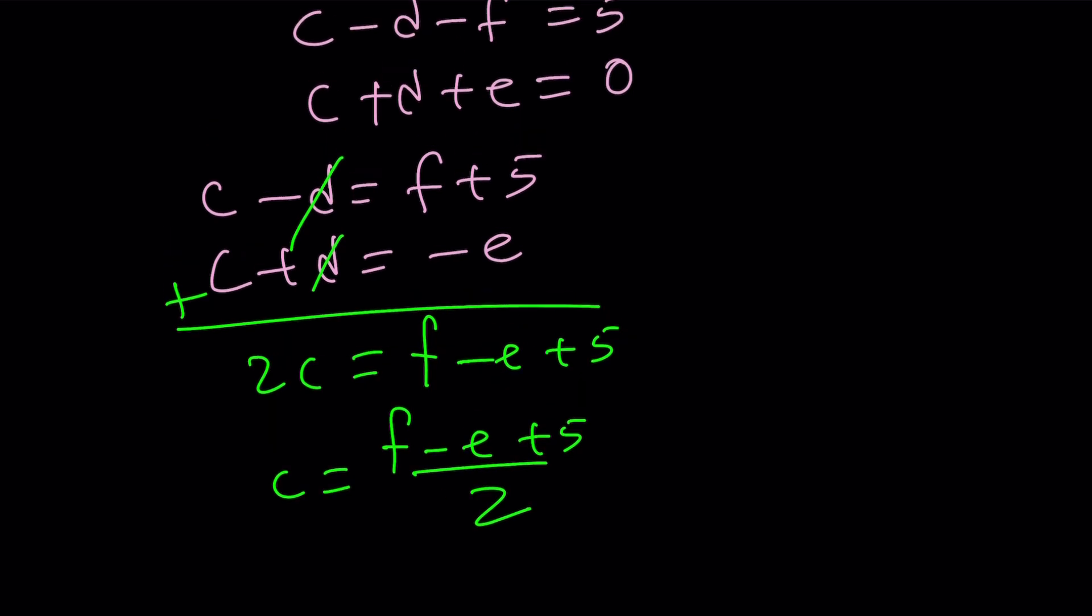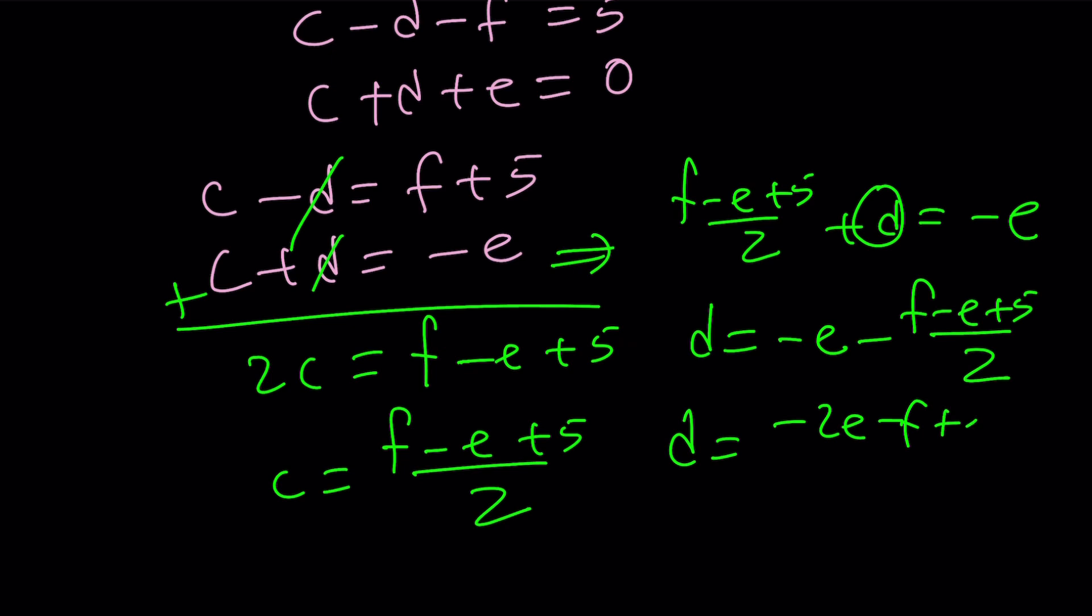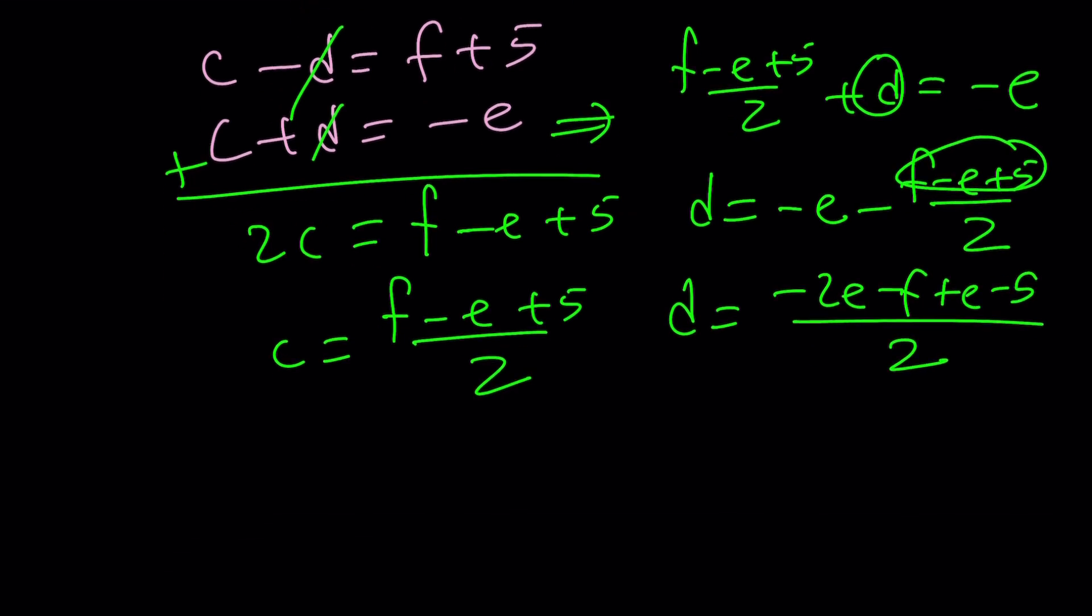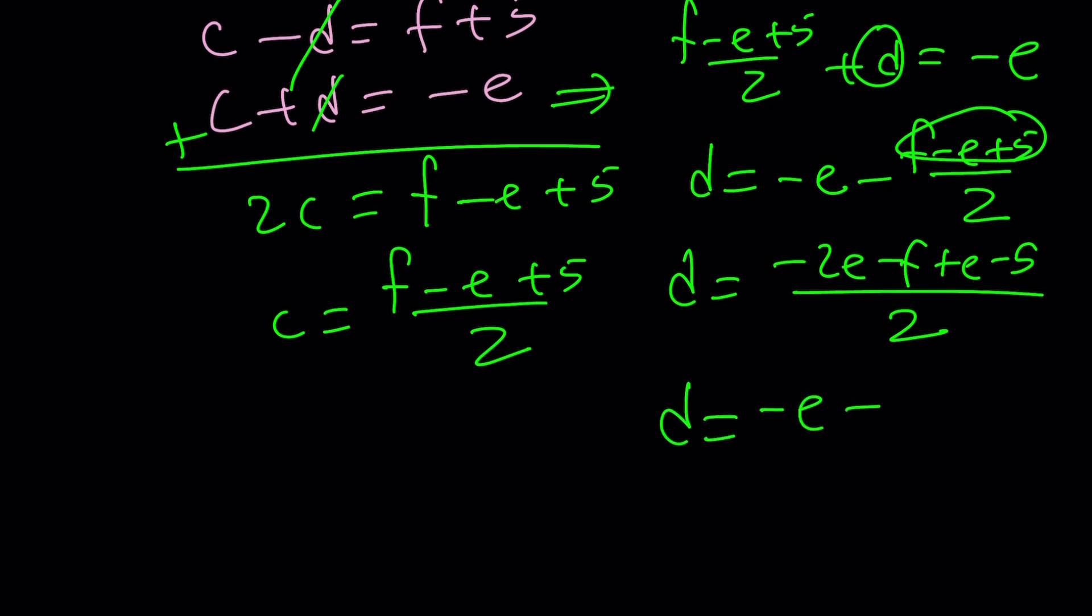And if you go ahead and plug it into one of these equations like the second one, f minus e plus 5 divided by 2 plus d equals negative e, and our goal is to solve for d here. So it's isolated, d equals negative e minus f minus e plus 5 divided by 2. That'll be multiplied, so it'll be like negative 2e minus f plus e minus 5. Don't forget to negate everything here. And then that should be d equals negative e minus f minus 5 divided by 2. So that's c, that's d.